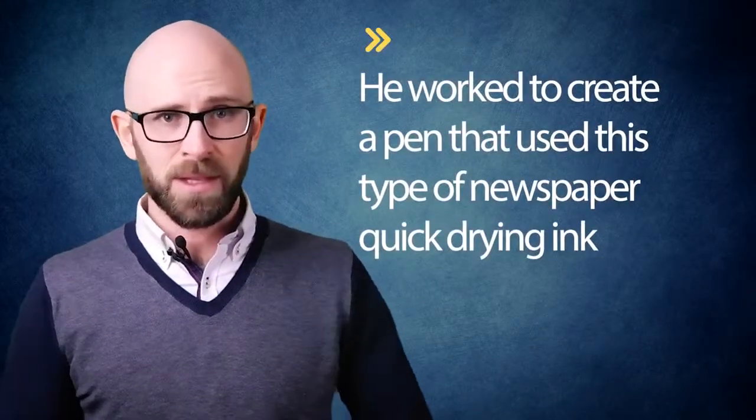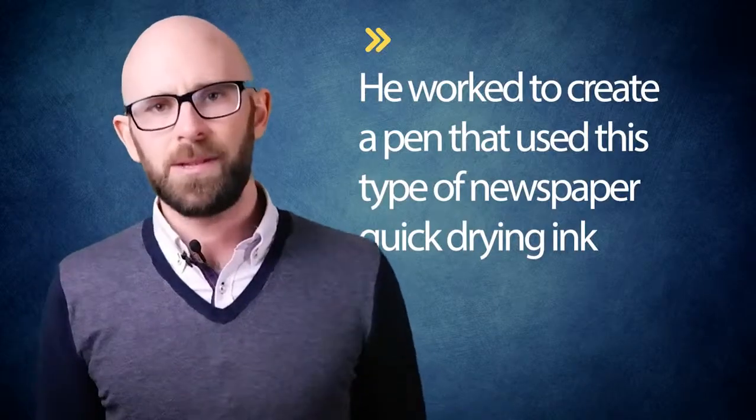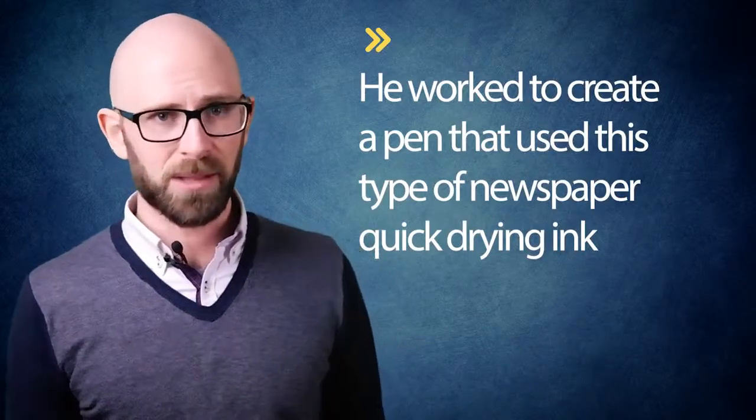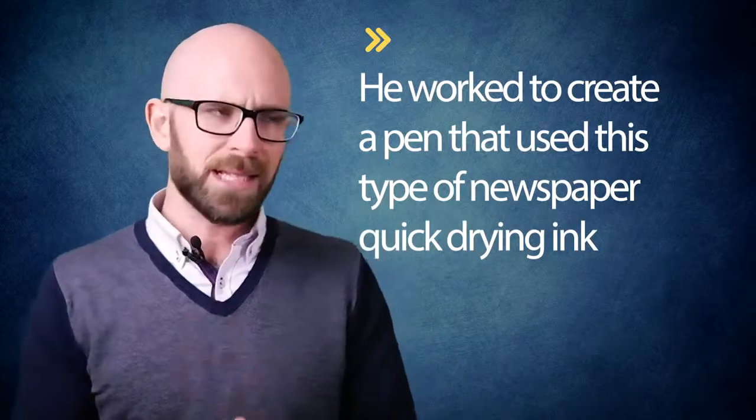Thus, he worked to create a pen that used this type of newspaper quick-drying ink. His early efforts using fountain pens with this ink failed, which led him to attempt a ballpoint-style pen. But the ink still wasn't quite working. Fast forward to 1938, after working with his chemist brother Giorgi, the two developed an ink that would dry near instantly but still flow well. Biro also perfected a semi-new system that would deliver that ink effectively.